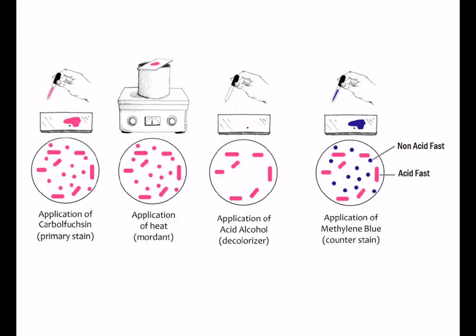Moving on to acid fast staining, also called Ziehl-Neelsen staining. It also has four steps: application of the primary stain carbol fuchsin, and instead of iodine, the slide is heated which acts as a mordant. Application of heat is the differentiating step between gram staining and acid fast staining. The third step is application of acid alcohol as a decolorizer, and the final step is application of methylene blue as the counter stain. Acid fast staining is mainly used for Mycobacterium because of the presence of mycolic acids in the cell wall.